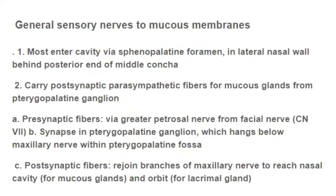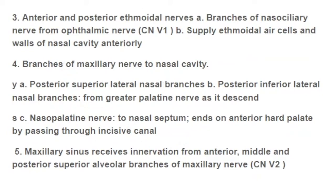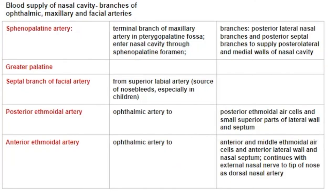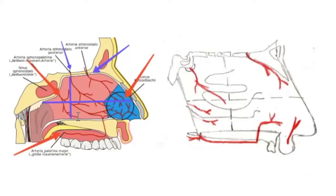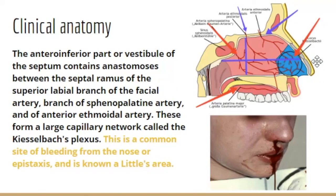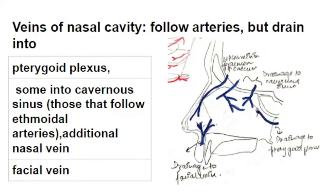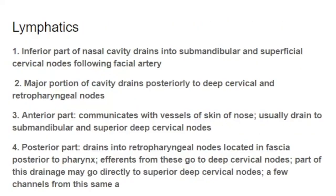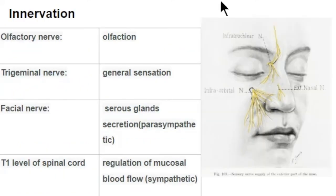To conclude, we have studied the vessels supplying the nasal cavity, including branches of the external and internal carotid arteries. We discussed Kiesselbach's plexus in the antero-inferior portion, also called Little's area. We covered venous drainage into the facial vein, pterygoid plexus, cavernous sinus, and superior sagittal sinus; the lymphatics; and the innervation. Thank you so much for watching and have a good day.